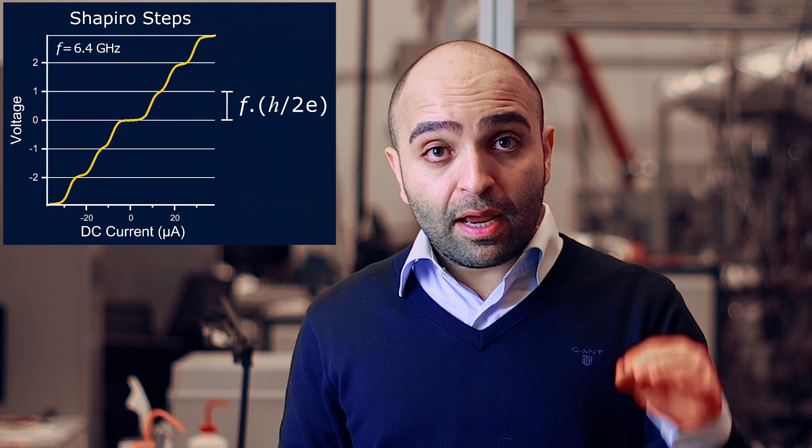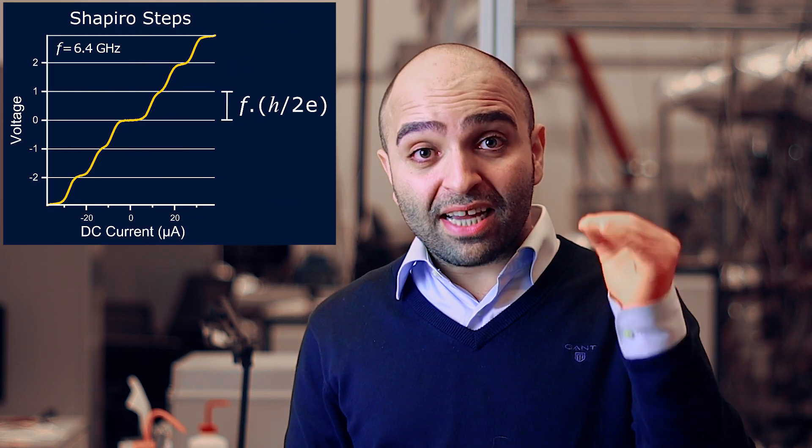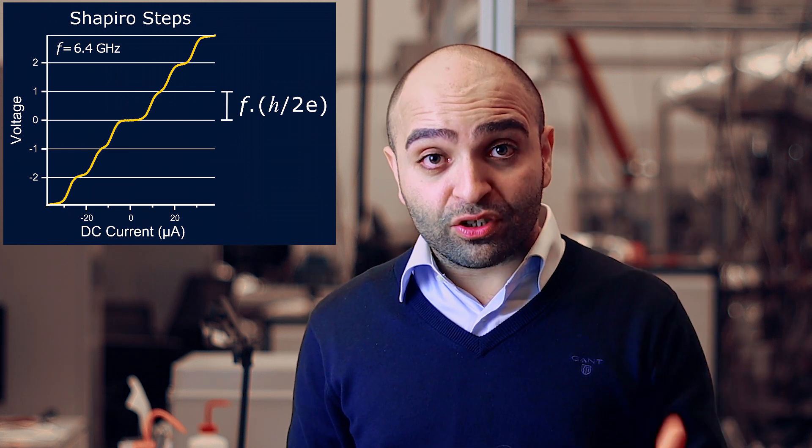Okay. Now the question is, how do you know this is a Josephson junction? Well, unfortunately, I don't have enough time to explain all of that in this video. But a good example is when you irradiate these junctions with microwaves, in which case you see quantized steps in the current voltage characteristics.